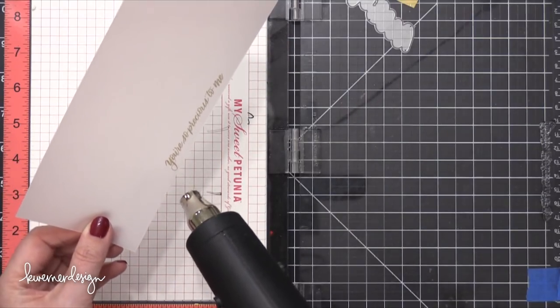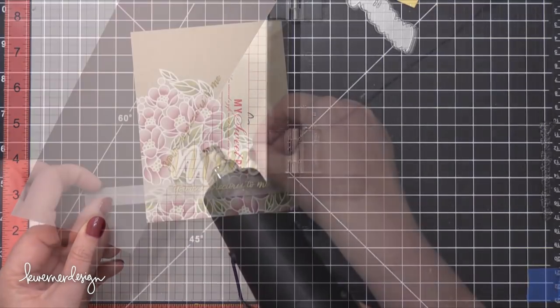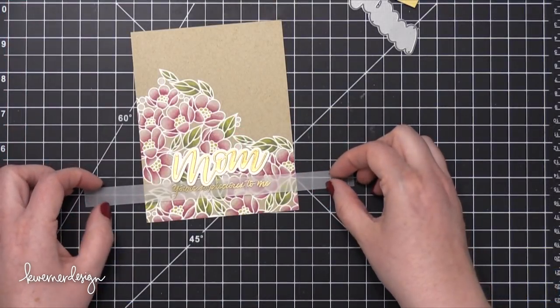I used some Gilded Embossing Powder from Brutus Monroe. It's a nice gold shade. And then I heat set that with my heat tool until it was smooth and melted.